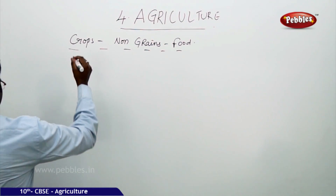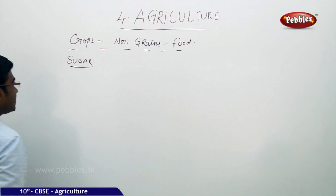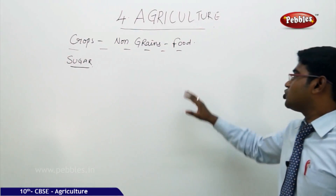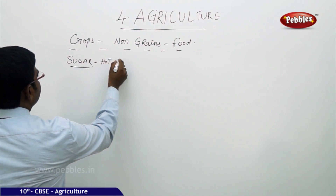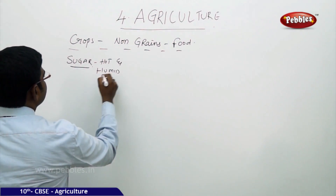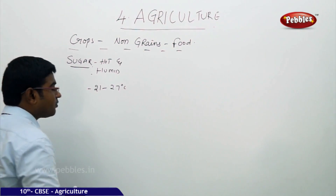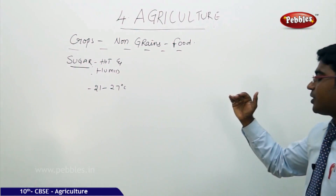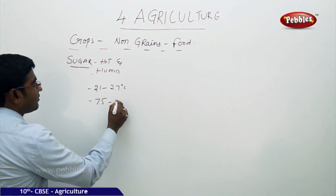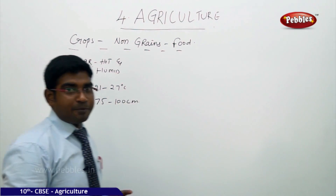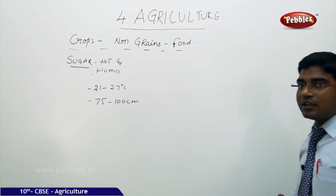The first food non-grain crop in India is sugar. For the production of sugar you need a hot and humid climatic condition, temperatures ranging from 21 to 27 degrees Celsius, and a good amount of rainfall from 75 to 100 centimeters per annum. If these three conditions are not fulfilled, we cannot produce any sugarcane crop.